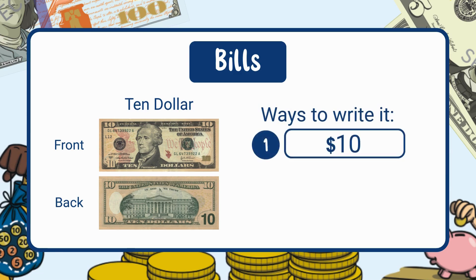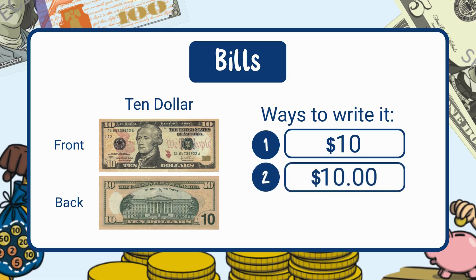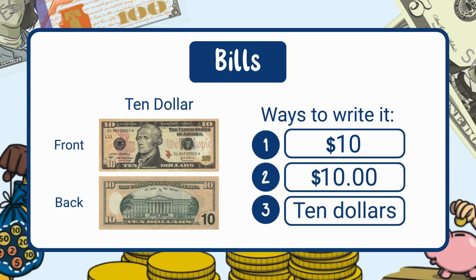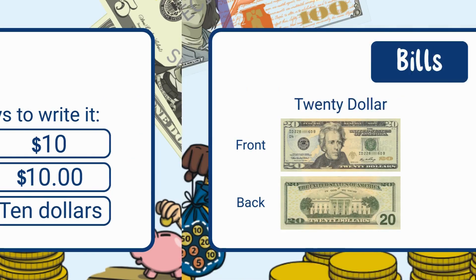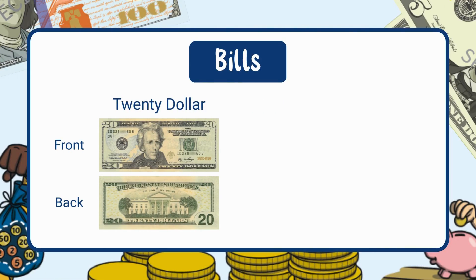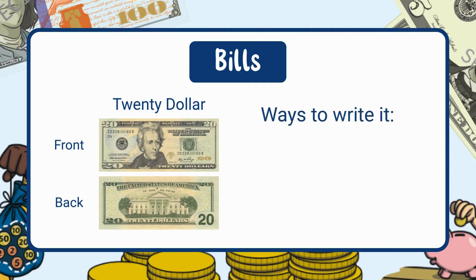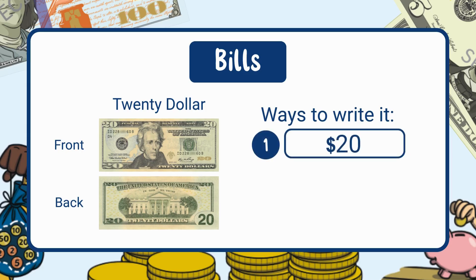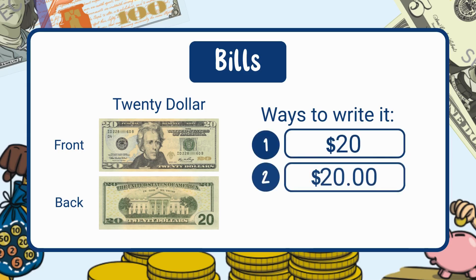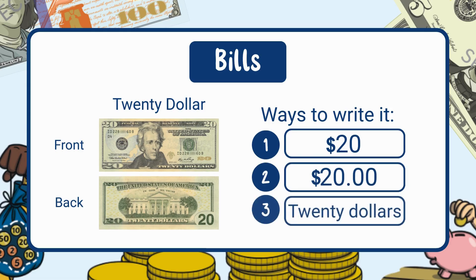Ways to write the ten dollar bill: standard form, ten dollars; decimal form, ten dollars; written form, ten dollars. This is a twenty dollar bill — it's worth twenty dollars. Ways to write it: standard form, twenty dollars; decimal form, twenty dollars; written form, twenty dollars.